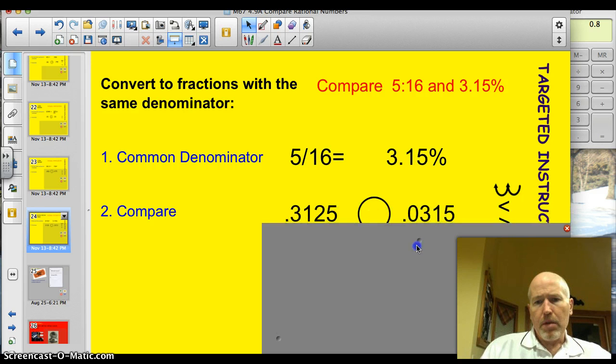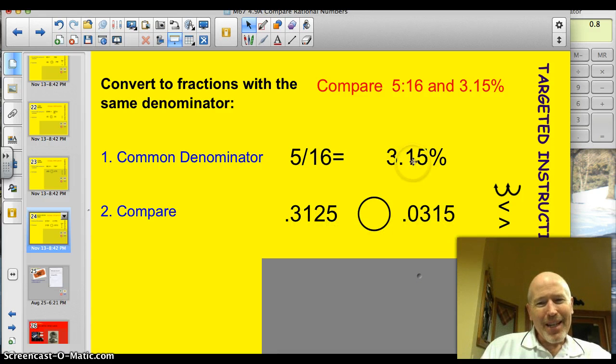Let's see. Well, if you punch 5/16 into the calculator, you're going to get 0.3125. If you put this guy, which is a percent, if you move that decimal, you get 0.0315. I'm wondering if you remembered that you had to have that 0 there as a placeholder. So when you look at these, even though they might look close at first, it's very, very obvious that this one is much larger. 0.31 versus 0.03.